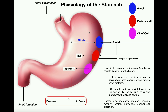As you digest that food more and more, it turns into a very thick liquidy substance which we call chyme. At some point, when the chyme has been fully digested from the stomach's point of view, it will be squirted through the pyloric sphincter into the duodenum of the small intestine.